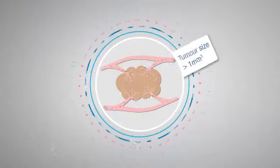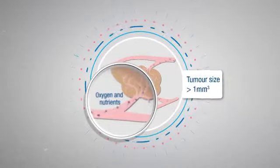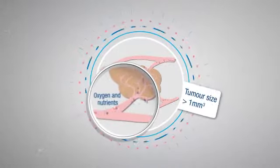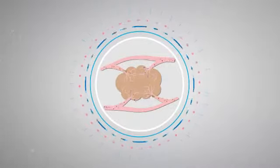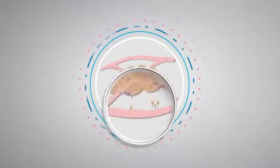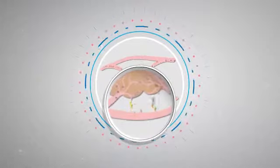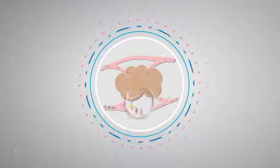In order to grow beyond a certain size, tumors require a blood supply to provide oxygen and nutrients. As a cancerous tumor grows, it sends out signals that stimulate production of new blood vessels, which help the tumor to grow and spread.